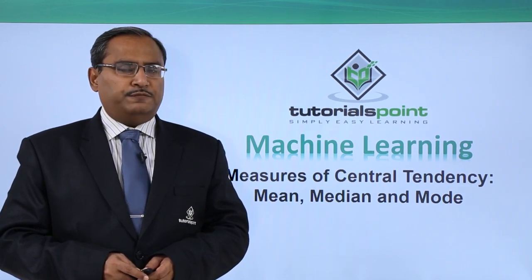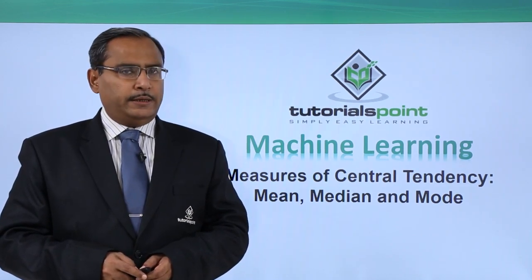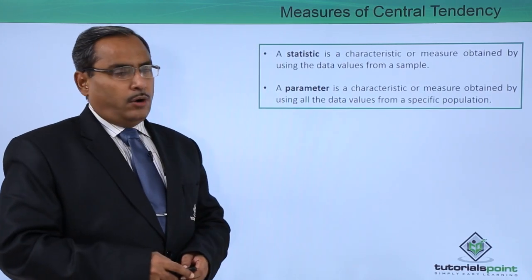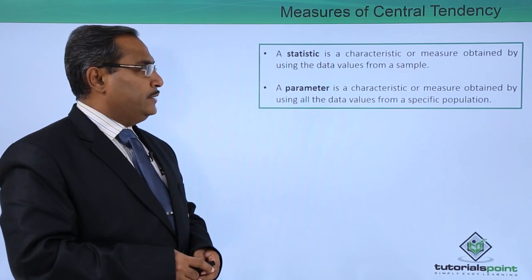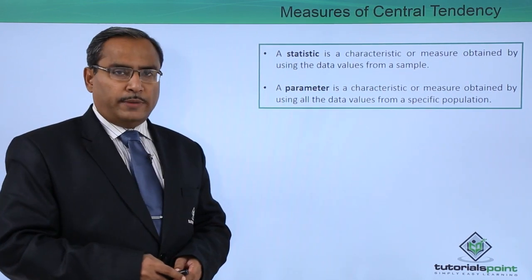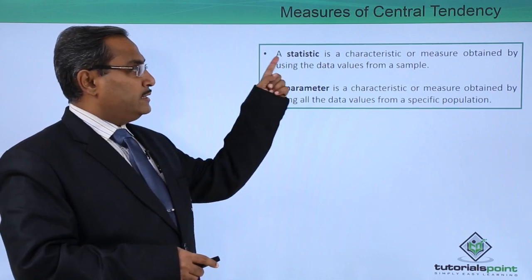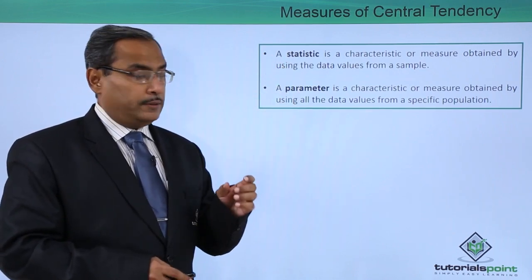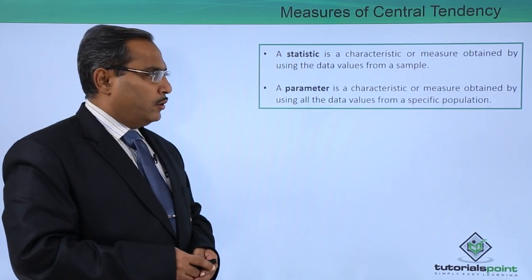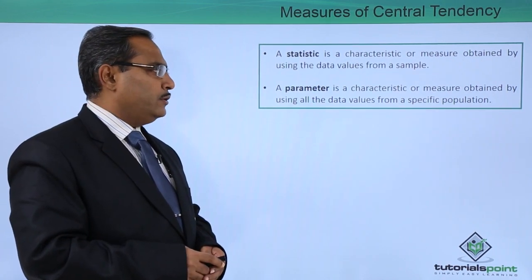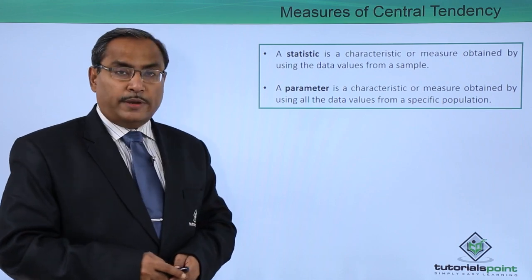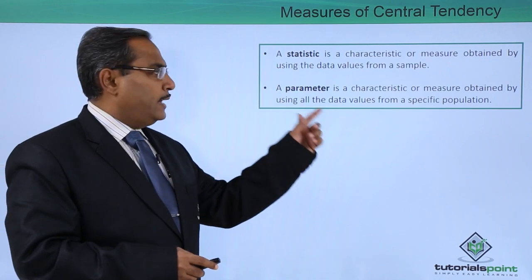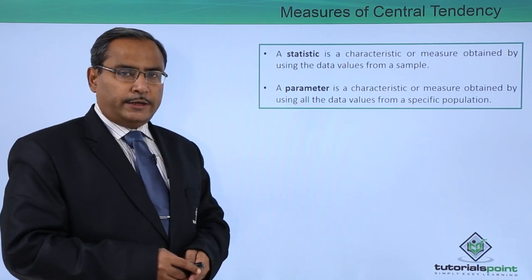We shall discuss measure of central tendency: mean, median, and mode. A statistic is a characteristic or measure obtained by using data values from a sample. Always remember, a statistic is a characteristic or measure for a sample, and a parameter is a characteristic or measure obtained by using all the data values from a specific population. Statistic is related with the sample and parameter is related with the population.